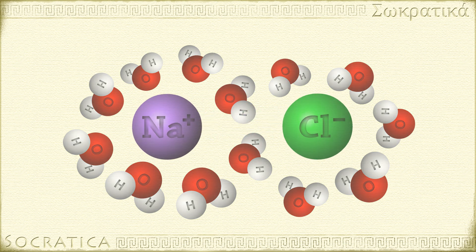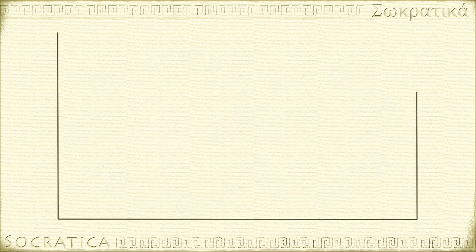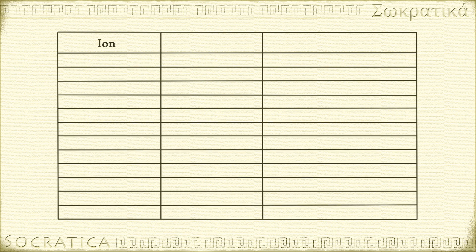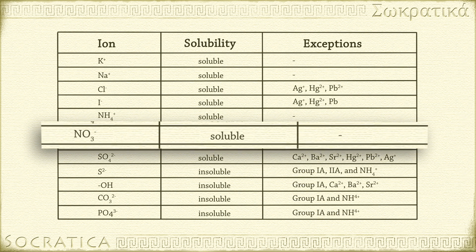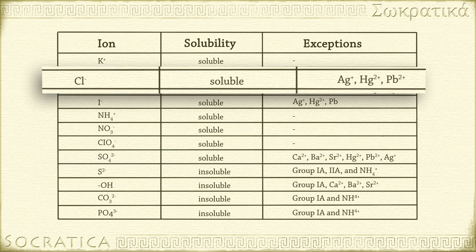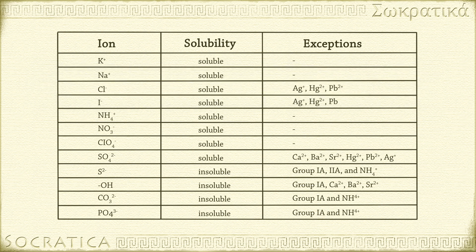Not all ionic bonds are soluble in water. This isn't something you can figure out just by looking at the periodic table — solubility is determined by experimentation. You may have seen a table of solubility rules; that's a summary of experimental results. Ionic compounds involving nitrates, for instance, are all soluble in water. Most chlorides, like NaCl, are soluble in water, but there are some exceptions, which include the chloride compounds involving silver, mercury, and lead.